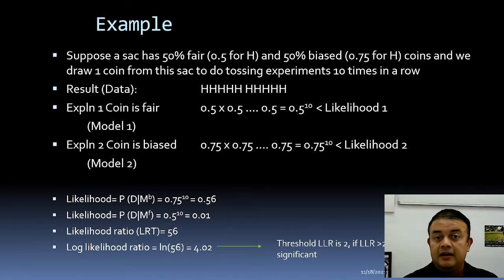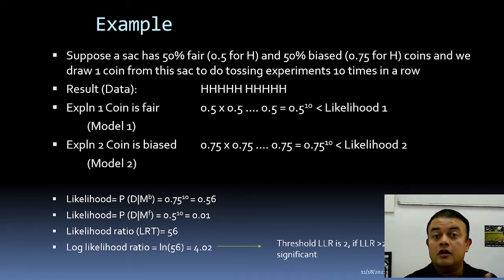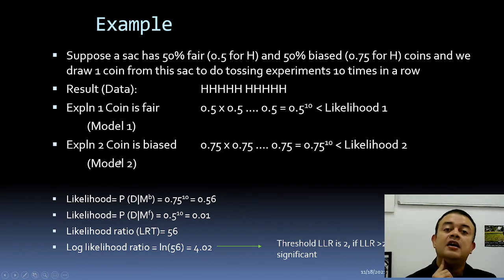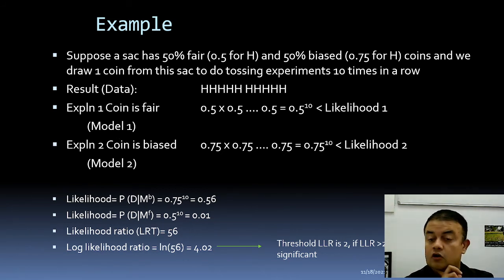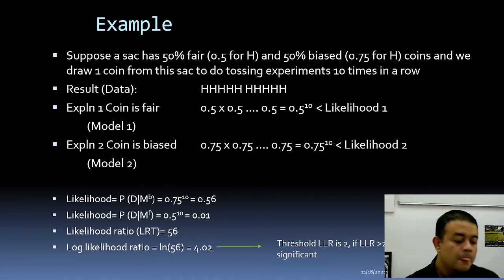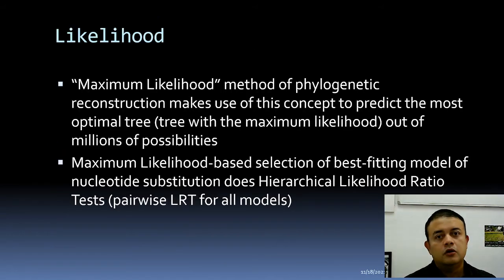The two models can be simple, as in the coin example — fair vs. biased — or in phylogenetics, Model 1 could be HKY and Model 2 could be Felsenstein 81 (F81). You can perform the same test to choose between them. All these tests can be performed using computer software.